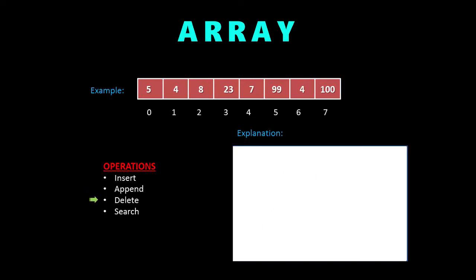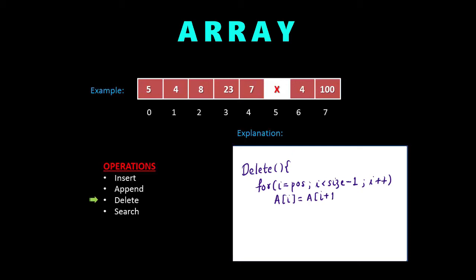The next operation is delete. We want to delete the item at position 5, so we delete that item and shift all items after that position to the left. We write a loop from position to size minus 1, setting a[i] to a[i+1], which shifts all elements to the left. We also decrement size because after deleting one item the array size decreases by 1. We can see that items 4 and 100 have been shifted to the left.